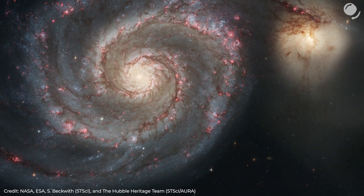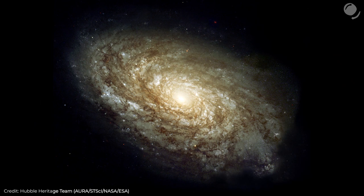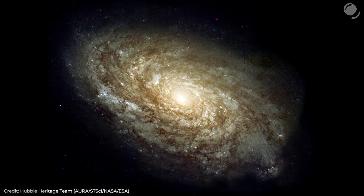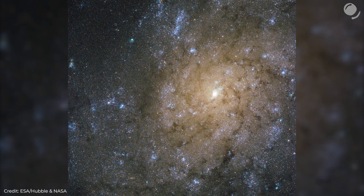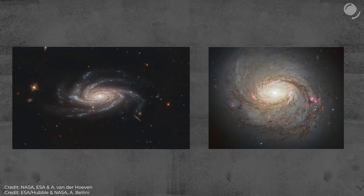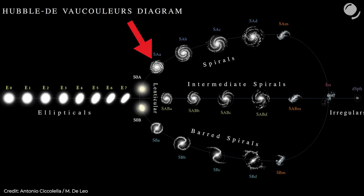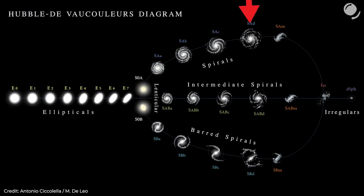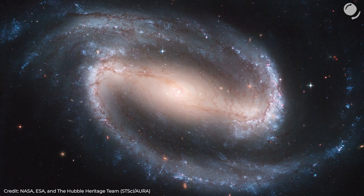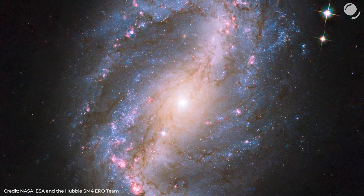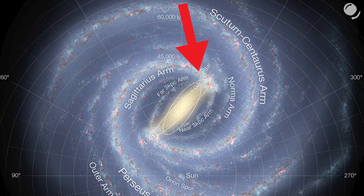One spiral galaxy can also be very different from another. I've mentioned grand design spiral galaxies, but there are also flocculent galaxies — their spiral structure is not that distinct, and they may have fragmented, non-continuous spiral arms. The number of arms can be different as well; the Milky Way, for instance, is thought to have four major arms. And there are also spiral galaxies with a bar in the middle — about two-thirds of observed spiral galaxies are barred spirals. The Milky Way is one of them.